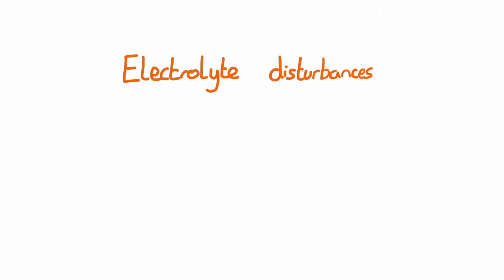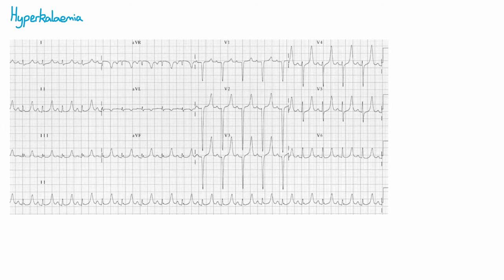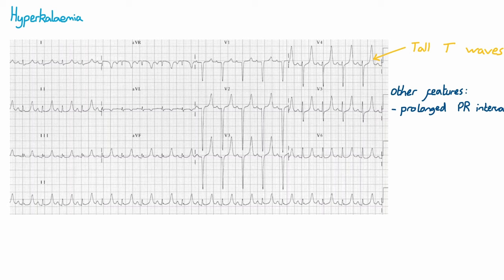It's also important to be able to recognise electrolyte disturbances on the ECG. We're going to cover two common ones: hyperkalemia and hypocalcemia. Hyperkalemia has the classic ECG feature of tall, tented T waves, which are quite pronounced in this ECG. This is often an early sign of hyperkalemia. With more pronounced hyperkalemia, patients may develop a prolonged PR interval and P wave flattening. As hyperkalemia progresses, patients can develop bradyarrhythmias or VF, eventually leading to asystole.